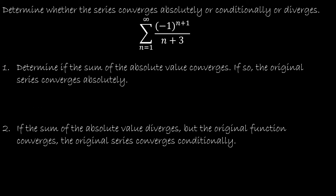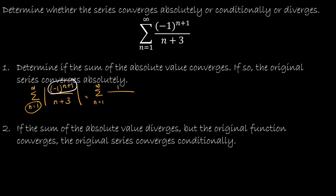For this example, I want to look at a series that does not converge absolutely. We begin the same way: looking at the summation from n equals 1 to infinity of the absolute value of the series given, which gives us a brand new series to determine convergence for. Just as in the last example, the alternating numerator becomes just 1. For the denominator, n plus 3, since n begins at 1, it will always be positive and increasing. Now I have to determine what test to use for this new series.